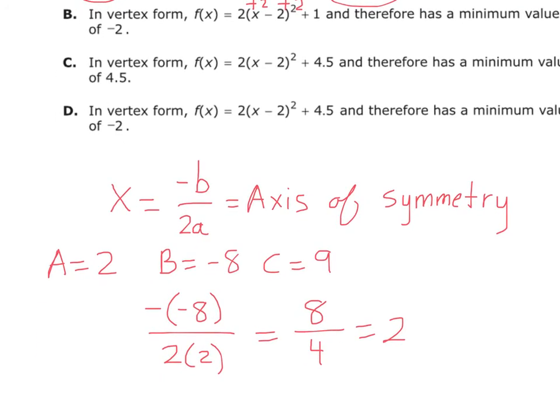Let's review. The formula for the x value of the vertex is x equals negative b over 2a. You need to memorize that. The axis of symmetry of a parabola is negative b over 2a.